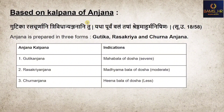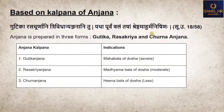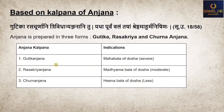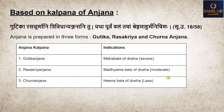Based on its kalpana (formulation), Anjana is classified into three forms: Guttika, Rasa Kriya, and Churna. Guttika Anjana is indicated in Mahabala dosha (severe conditions). Rasa Kriya Anjana is indicated in Madhyamabala dosha (moderate conditions). Churna Anjana is indicated in Hinaabala dosha (least/mild conditions). Among them, Guttika is superior, then Rasa Kriya, then Churna — as stated in the shloka: Yathapuram Balam Deshan Sreshta.